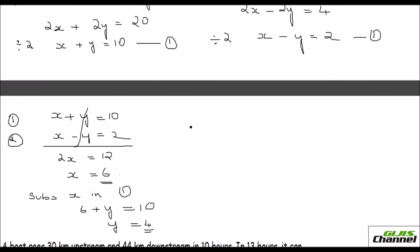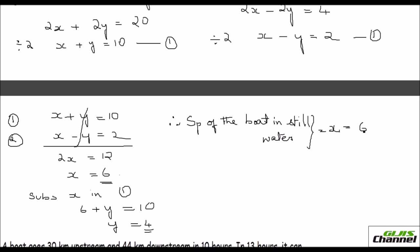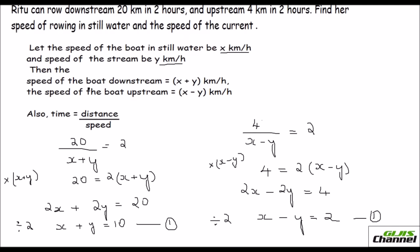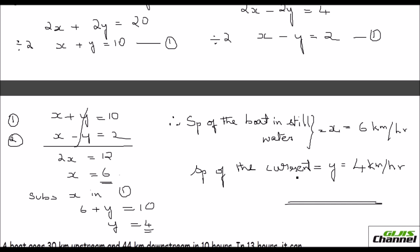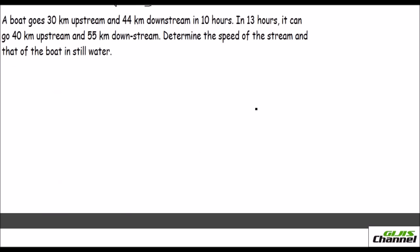Therefore, the speed of the boat in still water is x, which equals 6 kilometers per hour. The speed of the current is y, which equals 4 kilometers per hour. That's the answer to the first problem.